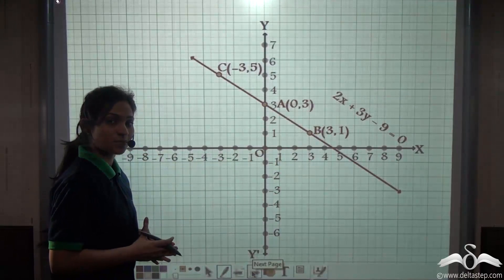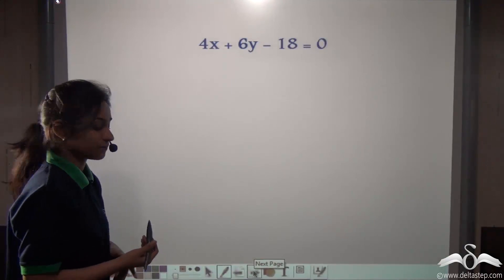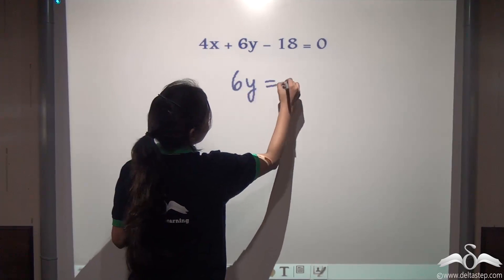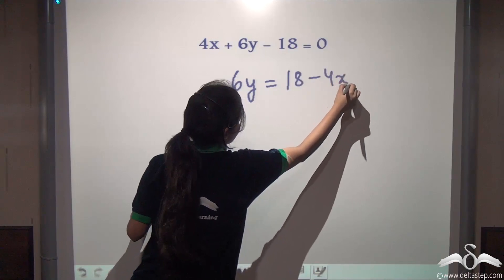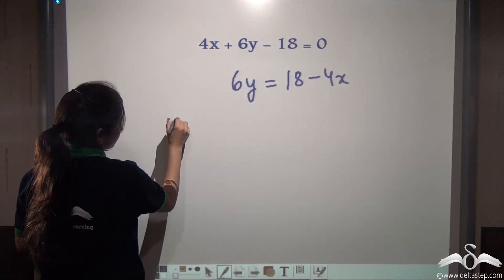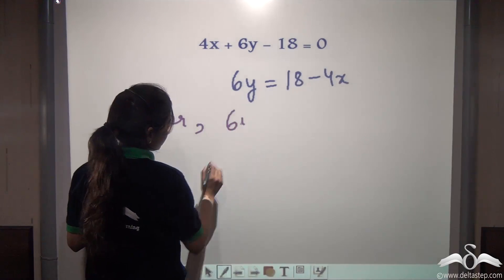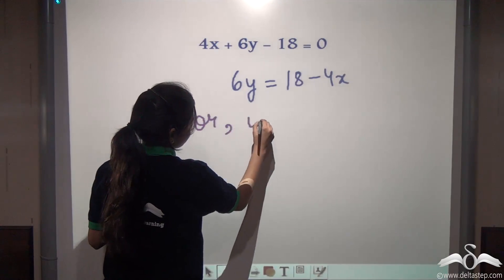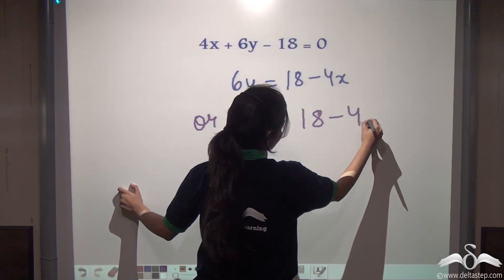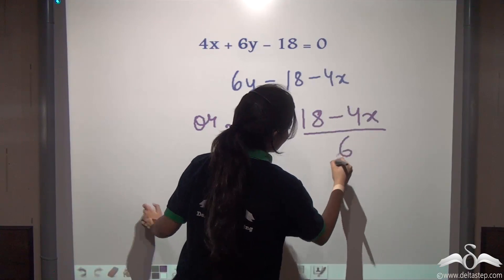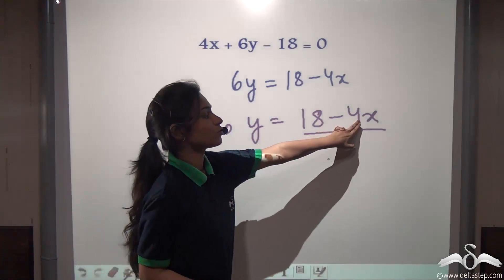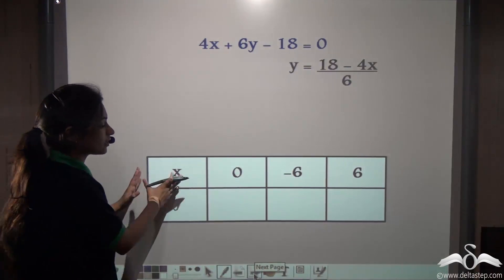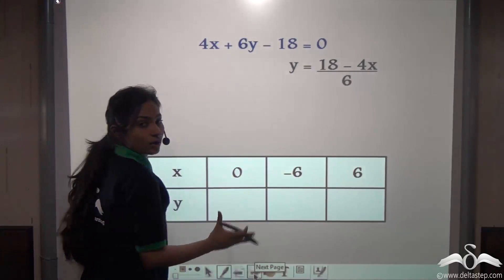Now we have a second equation as well. Let us solve this. First, make y the subject. So we have made y the subject. Now we will put values for x and find out y. Here we have taken again random values for x: 0, minus 6, and 6. Let us find out y.